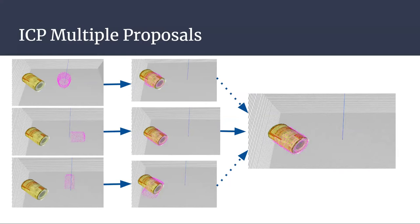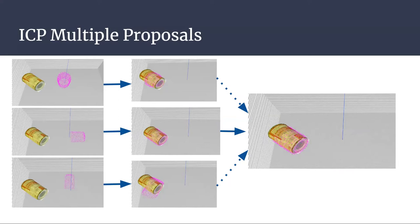While this helped align the point clouds, the symmetries inherent in the soup can mean that the pose could be rotated about the can or flipped pi radians across the can without affecting the point cloud alignment. This insufficiency of ICP resulted in high error when estimating poses.